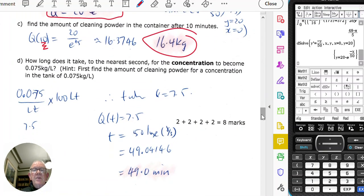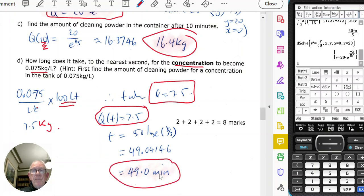How long does it take for the nearest second for the concentration to become this? Well, if the concentration is 0.075 kilograms per liter, and there's 100 liters, therefore that's the same as having 7.5 kilograms of powder. So make Q equal to 7.5, solve for t, you get 49 minutes.